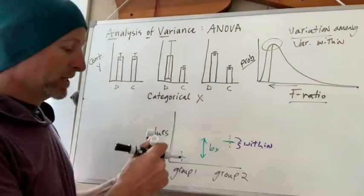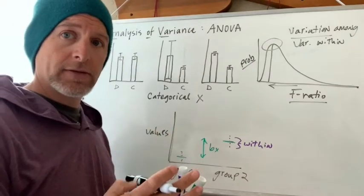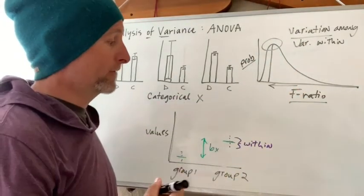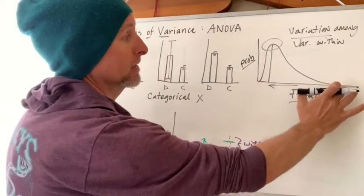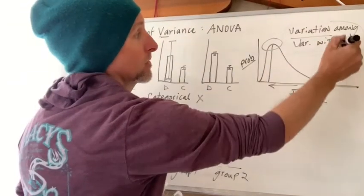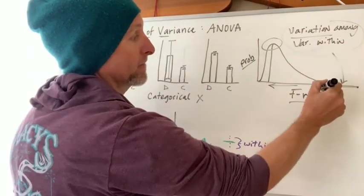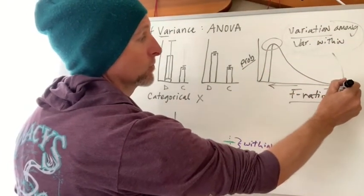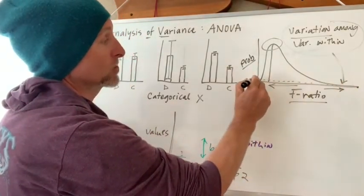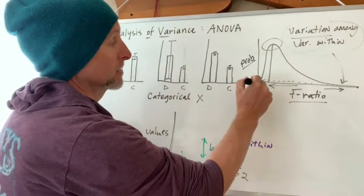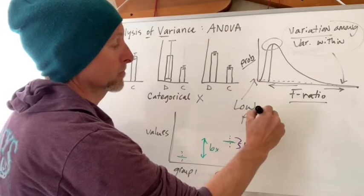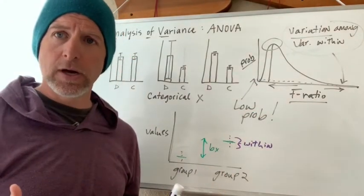This will happen in a rare event. In that event that I have a large amount of variation among and a low amount of variation within, it's a low event and I get a high value because this will yield me a high f-ratio. So the f-value will be out here. And if we trace this back to the y-axis, this is a low probability. That doesn't happen very often.